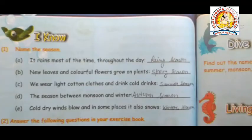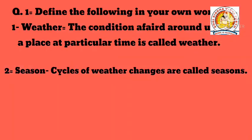Name the season. It rains most of the time throughout the day — rainy season. New leaves and colorful flowers grow on plants — spring season. We wear light cotton clothes and drink cold drinks — summer season. The season between monsoon and winter is called autumn. Cold dry winds blow and in some places it also snows — winter season.